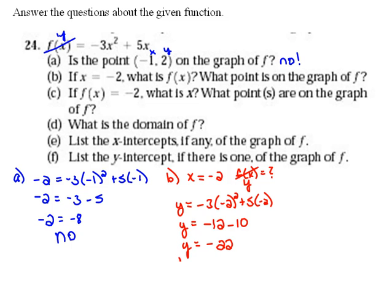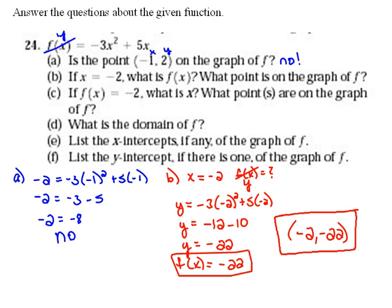So then we probably should write that in more proper notation. f(x) would equal negative 22, since that's what they technically asked us. Then don't forget, it said what point is on the graph of f? Well, when we used negative 2 for an x value, we found negative 22 for the y that goes with it. So our point looks like (-2, -22).